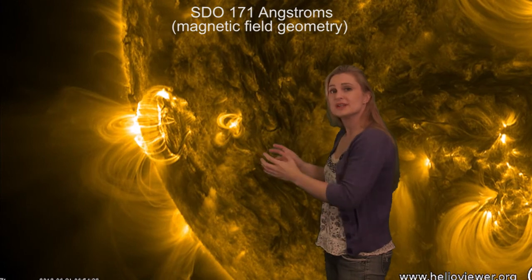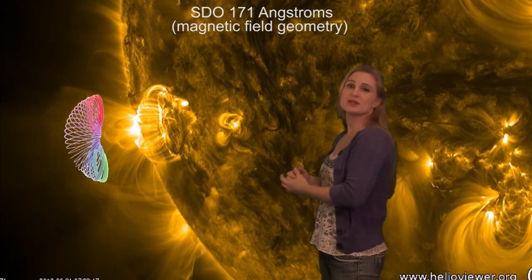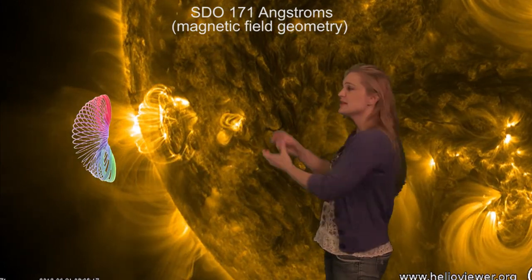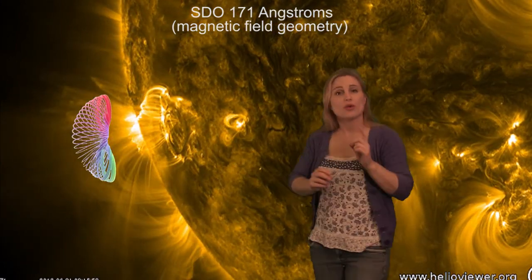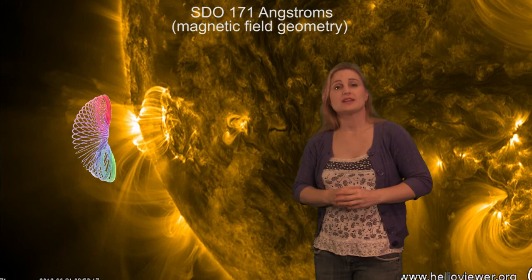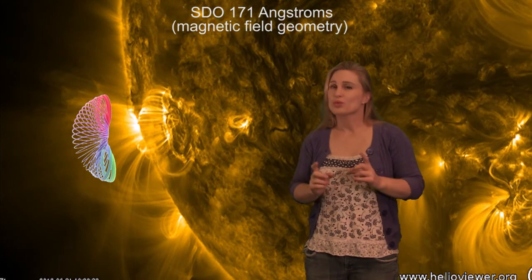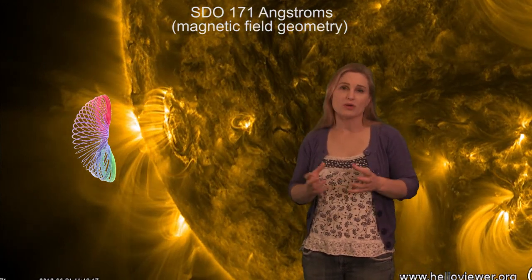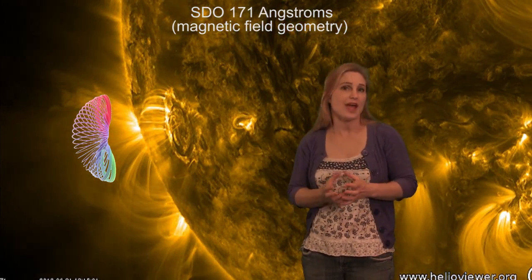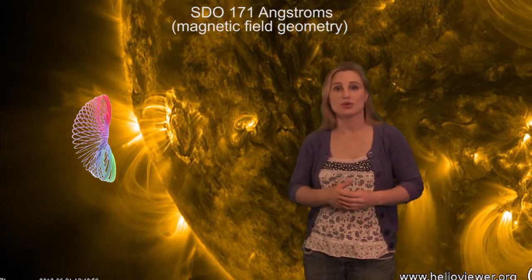If you look closely, they resemble a slinky that's aligned vertically, and the orientation of that slinky really does have a lot to do with whether or not we're actually going to have an effect at the Earth.